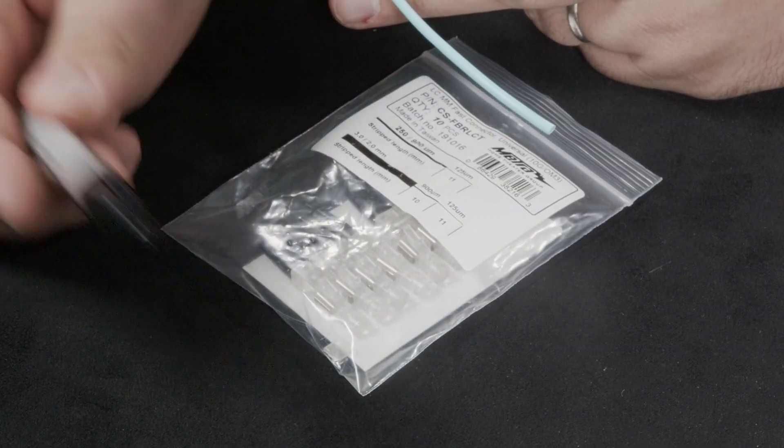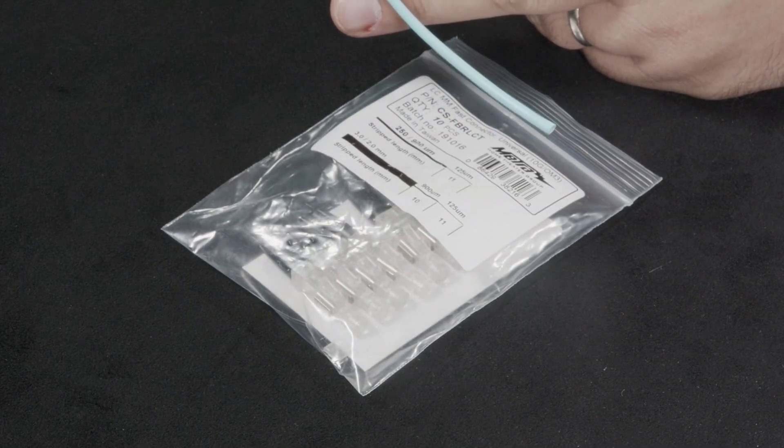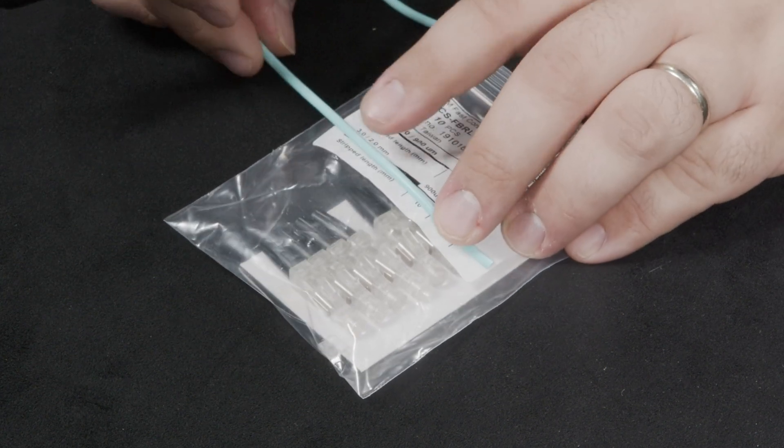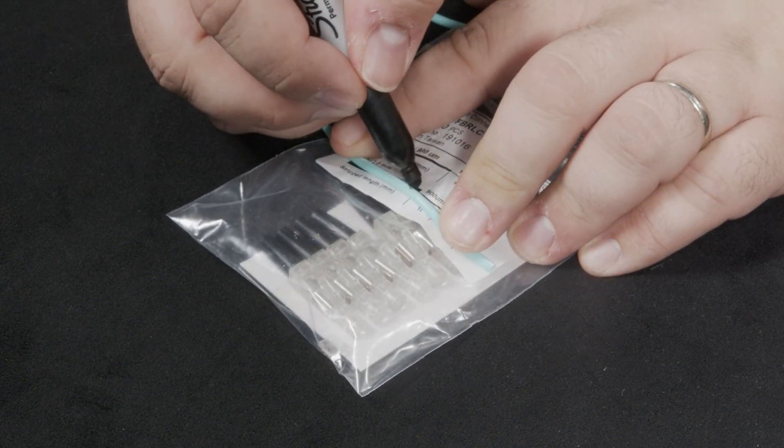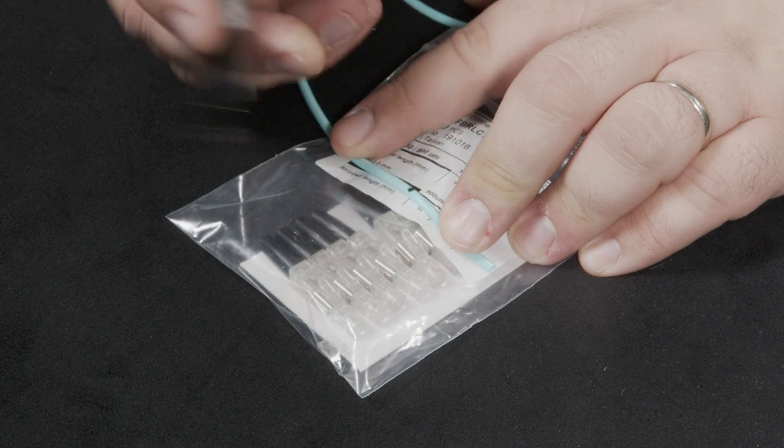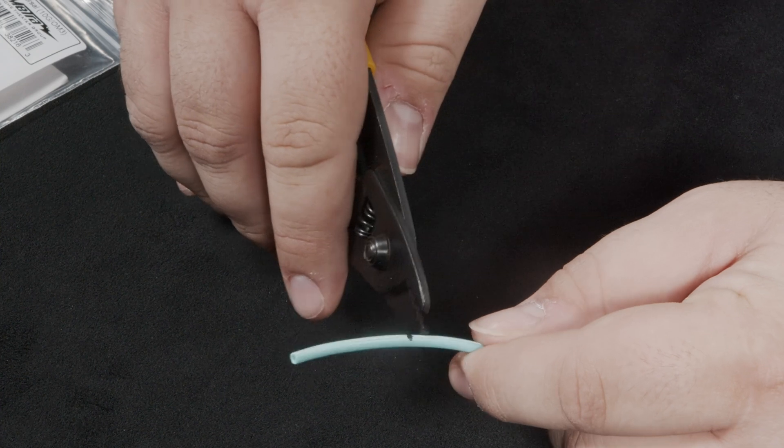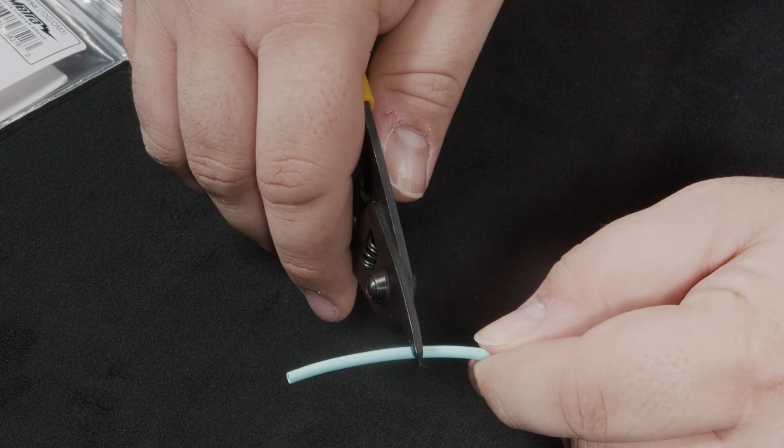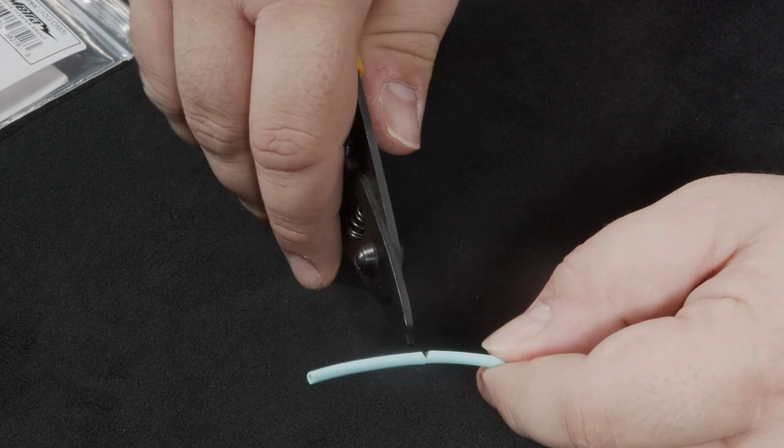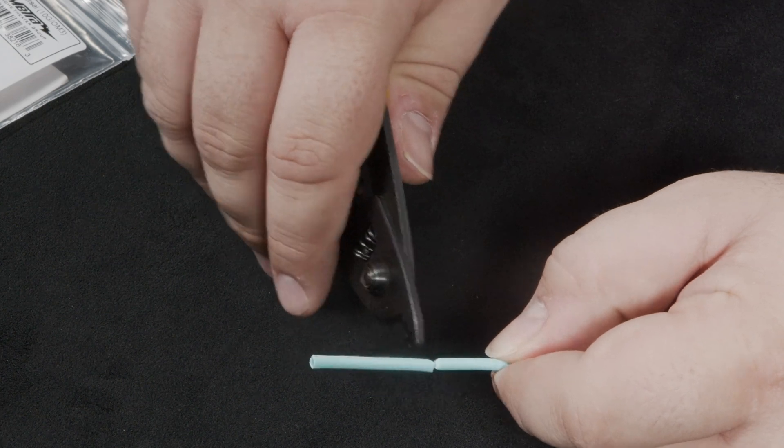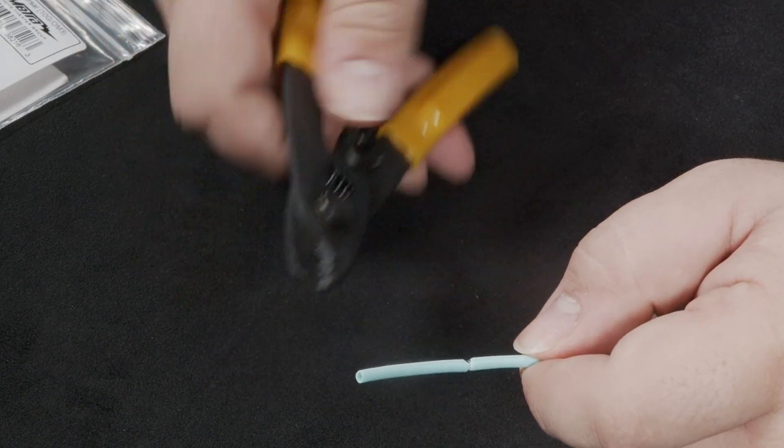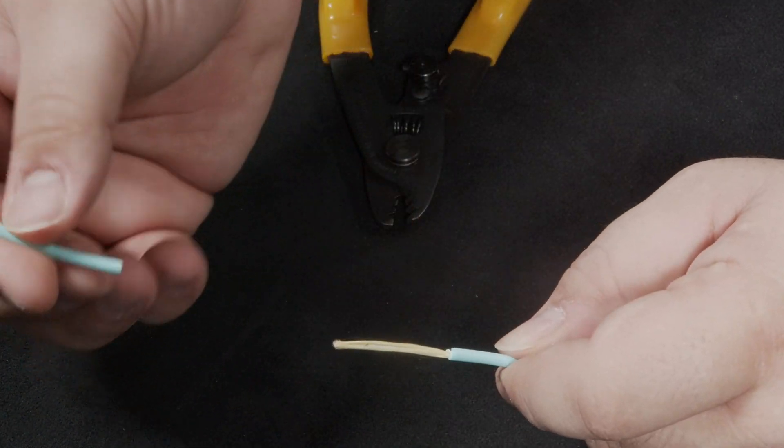Now using the packaging for the LC connector lay the fiber out over the diagram and using a felt tip marker mark where the outer jacket needs to be removed. Take the fiber strippers and use the outermost opening to strip off the outer jacket. As a tip, close the strippers on the jacket once, then open, twisting the cable 90 degrees and repeat. You should be able to remove the jacket with your hand.